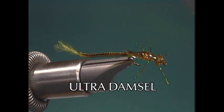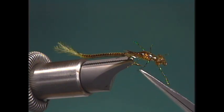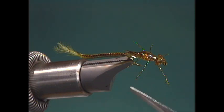The shell back is a combination of epoxy and medallion sheeting. The legs are called sparkle damsel legs, another new product put out by Umpqua Feather Merchants.